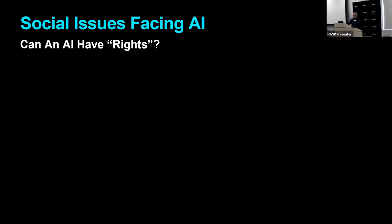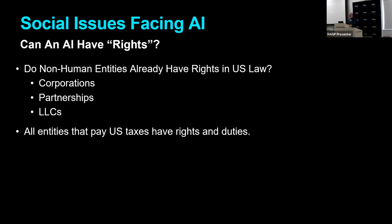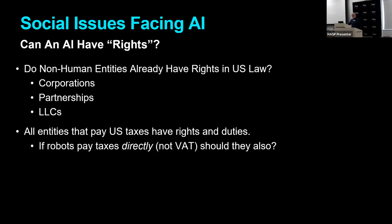Another social issue facing artificial intelligence is the whole question of whether an AI can have rights. Is there any precedent — do non-human entities already have rights in US law? Absolutely. Corporations are non-human; they have rights and duties. Partnerships, limited liability corporations — all entities that pay US taxes have rights and responsibilities. They're not AIs, but they are non-human entities. Now I'm not talking about a VAT here, but if robots ever had to pay taxes directly, under US tax law they would have responsibilities — and also some rights.